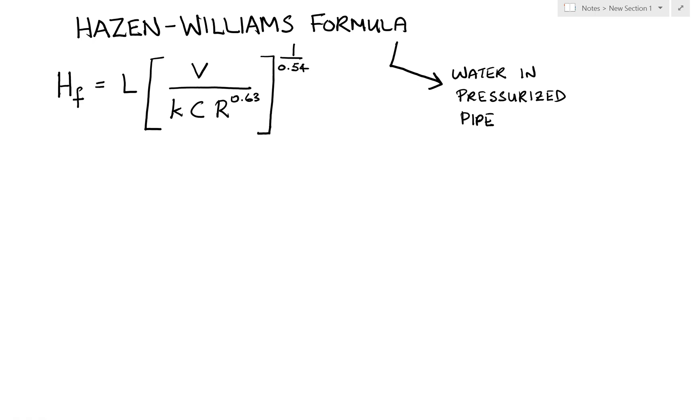Now what I'd like to do before we do an example is to go down through each parameter so you understand what we're looking at here. The first thing is the HF itself, which is the head loss due to friction. Its units are feet or meters depending on whether you're in U.S. customary or S.I. metric.